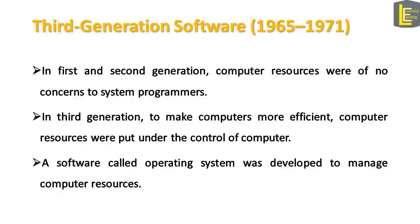In the first and second generation, computer resources were of no concern to system programmers, because instructions for each piece of hardware were written separately. In the third generation, to make computers more efficient, computer resources were put under the control of the computer. To do that, a software called an operating system was developed to manage computer resources.